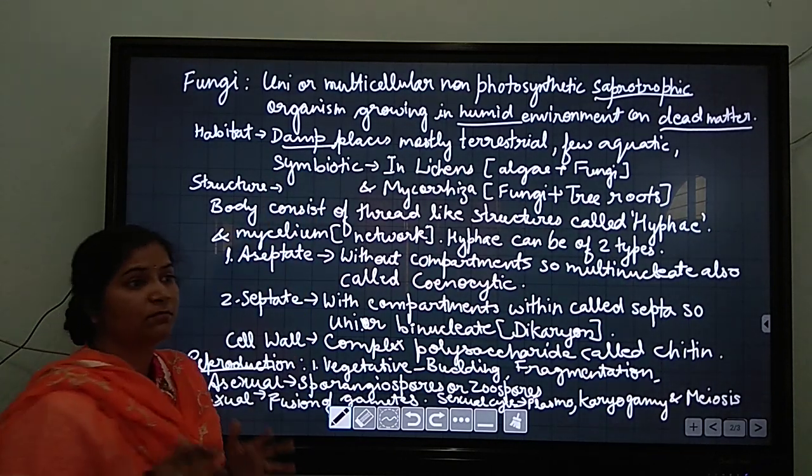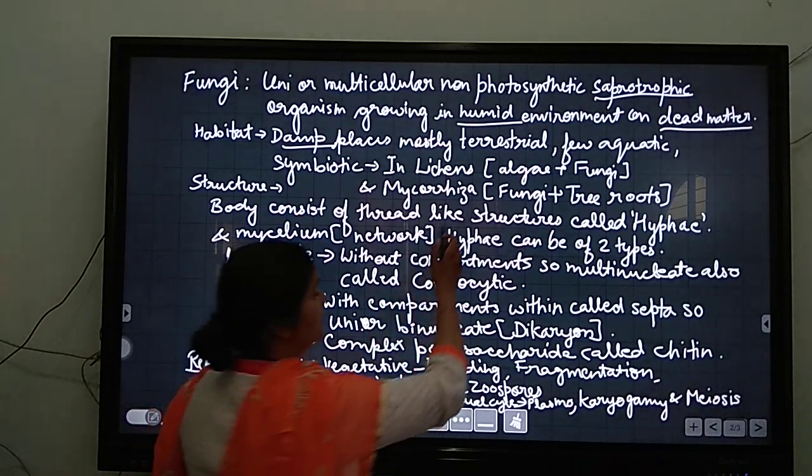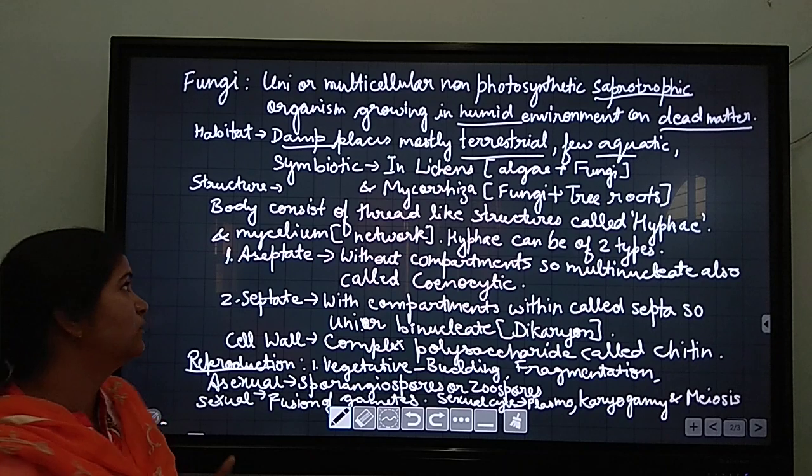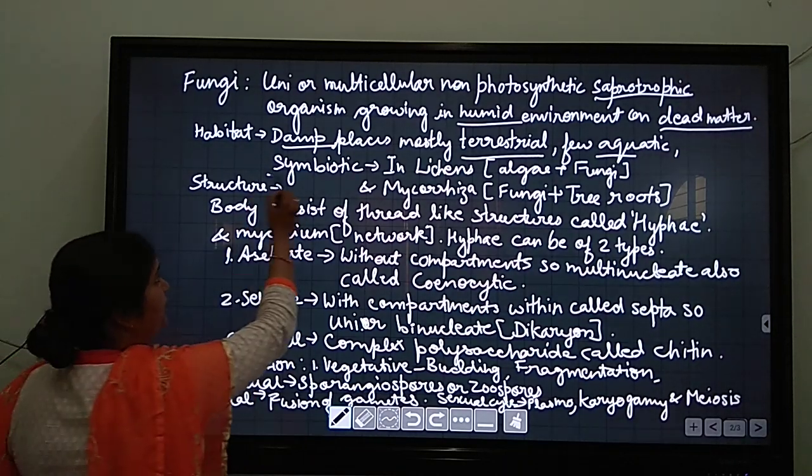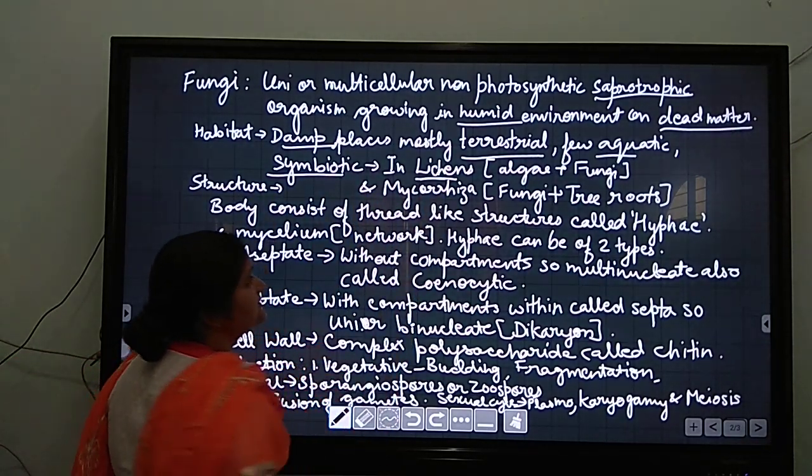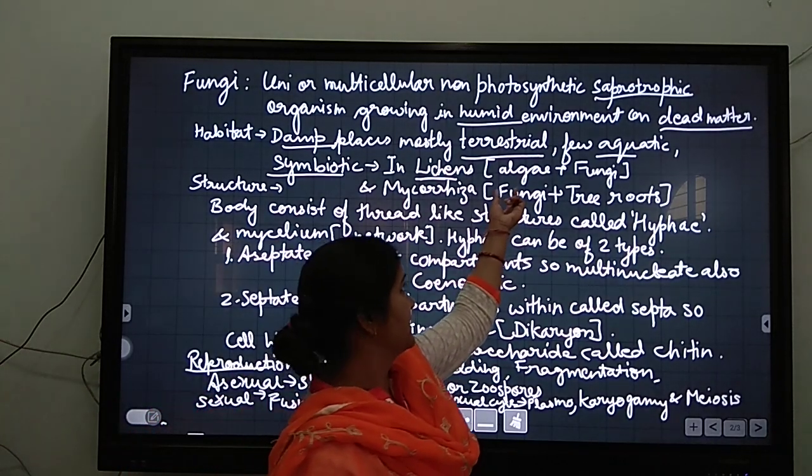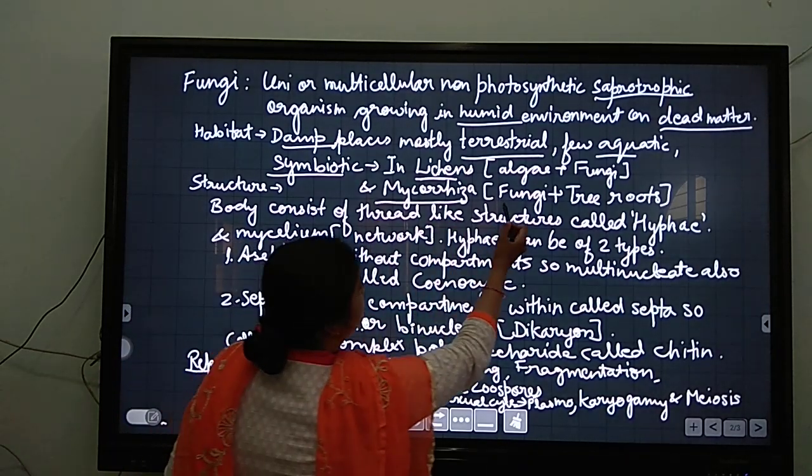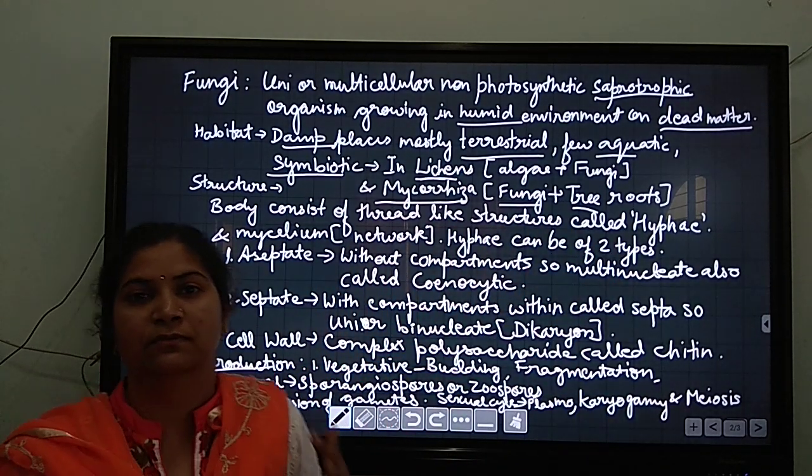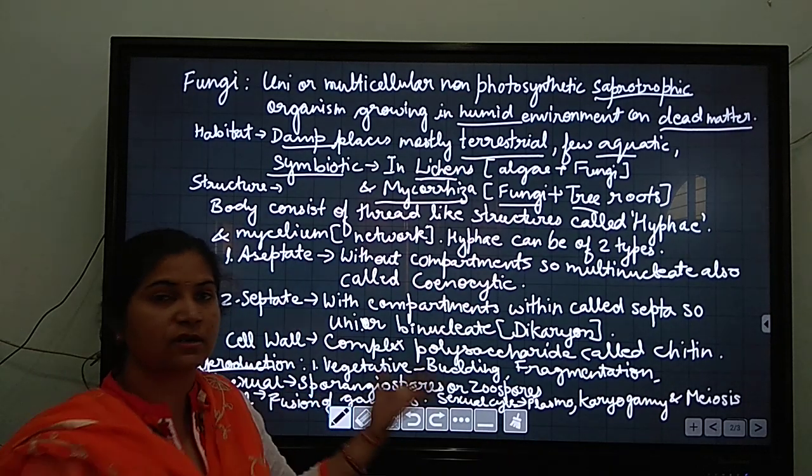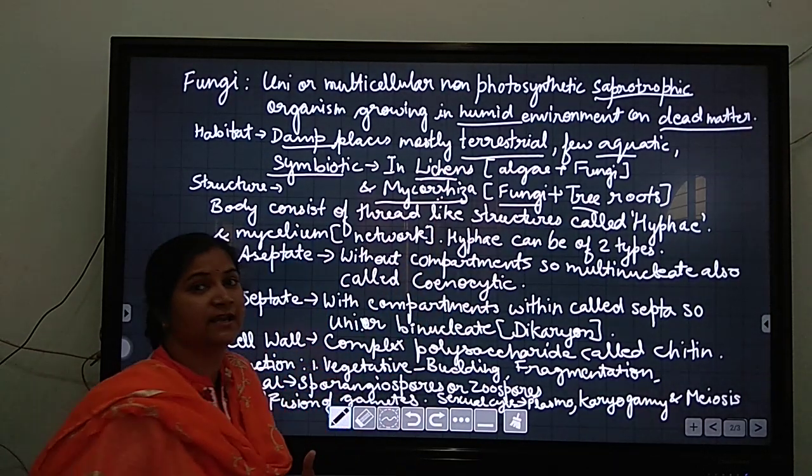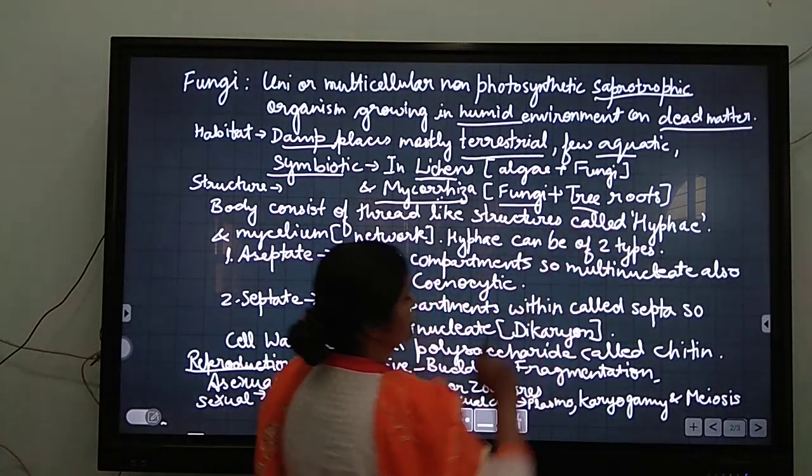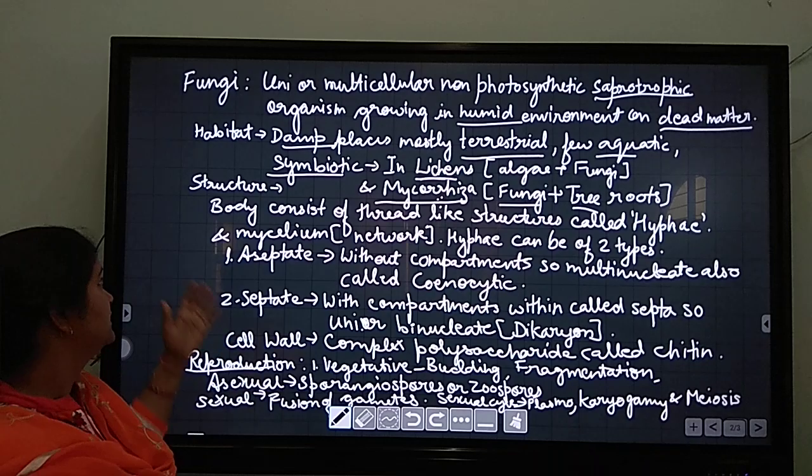Habitat is damp places - where moisture and humidity is present. Mostly they are terrestrial and few are aquatic. They can be found even in the water. They can be symbiotic. Example is lichens. You all know that lichen is a combined association of algae and fungi. Mycorrhiza - fungi in the roots. Rhiza is related to roots. So fungi in the roots is mycorrhiza. This is also the habitat.